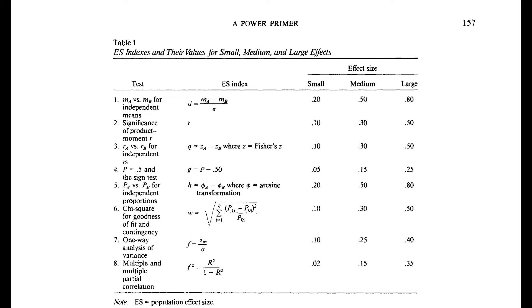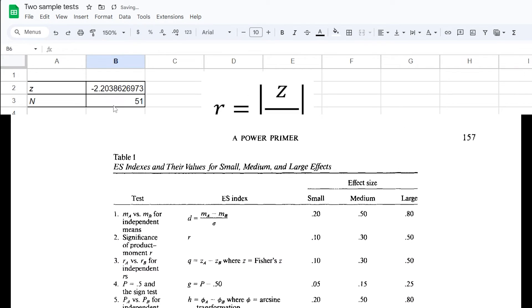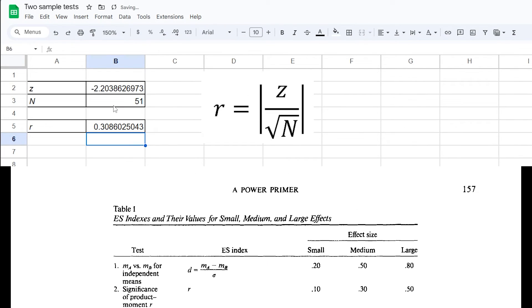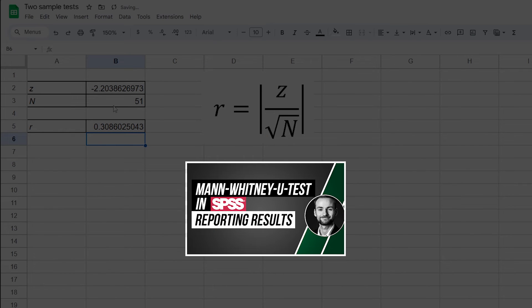Page 157 shows three thresholds for the effect size r: 0.1, 0.3, and 0.5 for small, medium, and large effects. In my example, 0.309 is above the threshold for a medium effect using Cohen's thresholds.